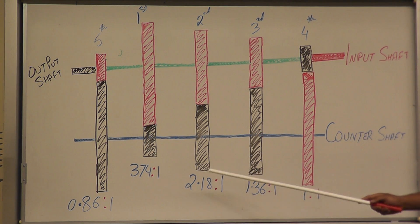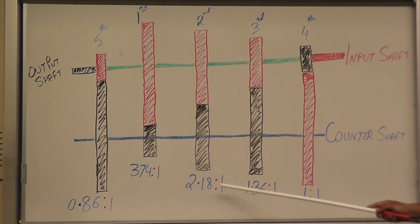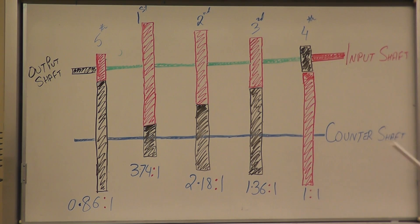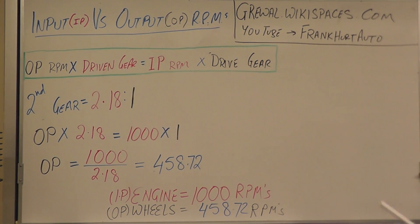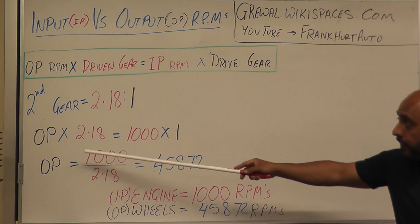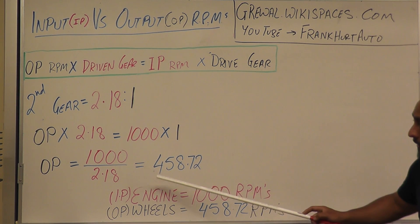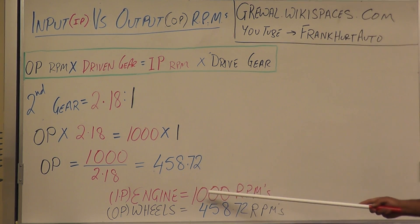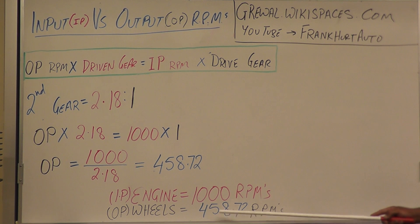For second gear, the gear ratio between the driven gear and drive gear is 2.18 to 1. Plugging everything into the equation for second gear — 2.18 driven, 1 drive — solving the equation gives you 458.72. If your engine is running at 1,000 RPMs, your wheels are running at approximately 458 RPMs.